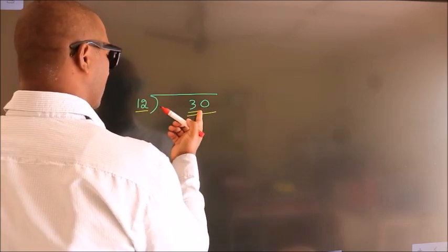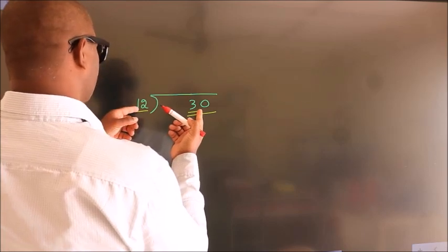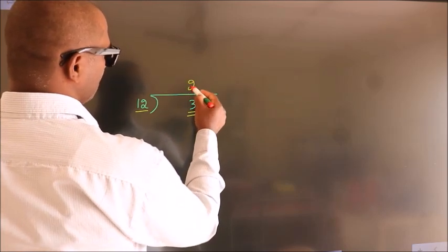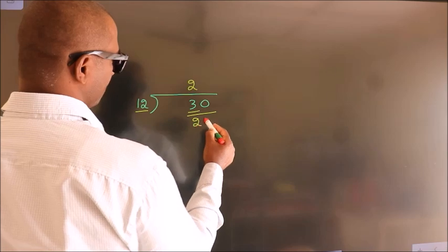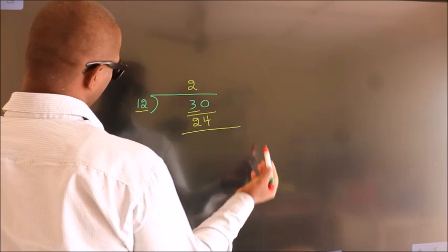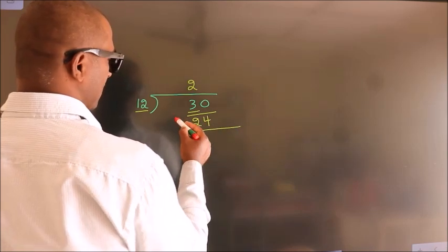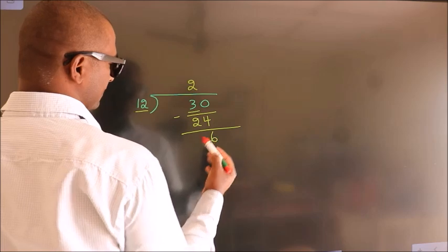A number close to 30 in the 12 times table is 12 times 2, which is 24. Now we should subtract. We get 6.